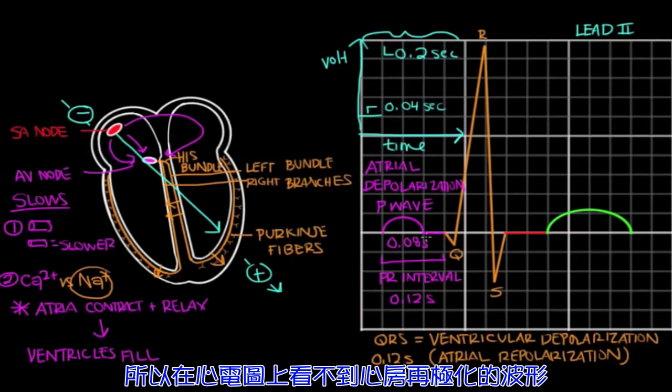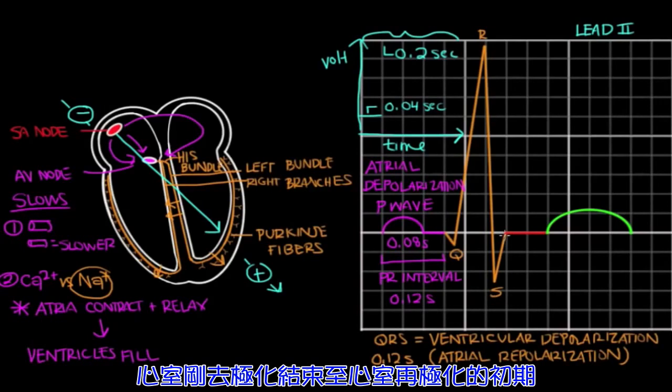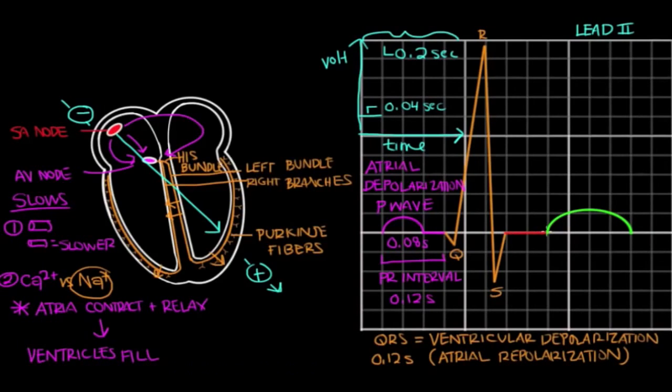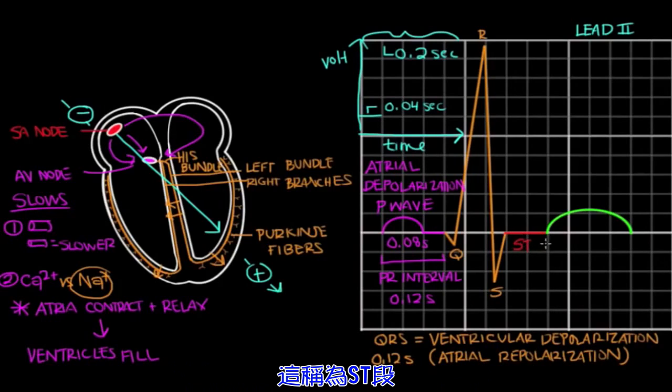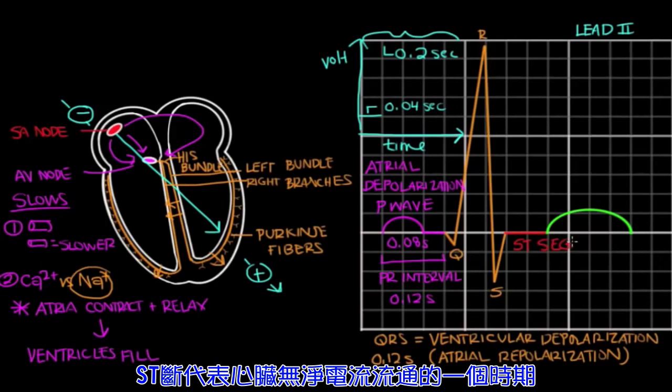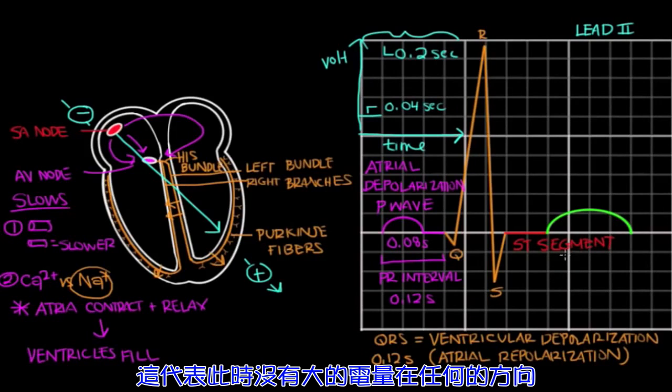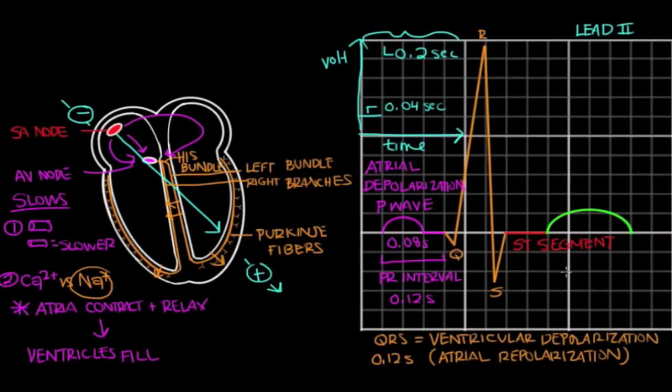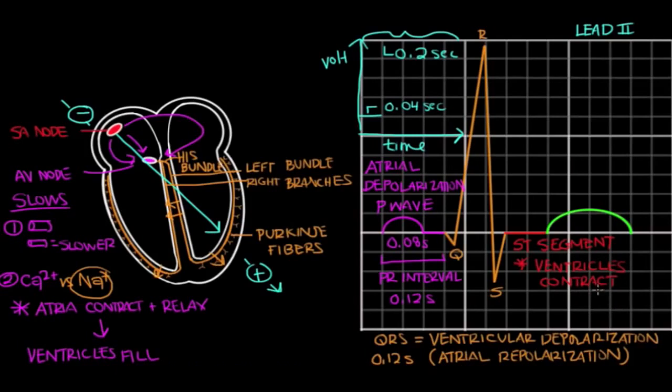So just after ventricular depolarization and in the initial phase of ventricular repolarization, there's a flat segment on the EKG known as the ST segment. And the ST segment represents a period where there's no net current. That's to say there's no large electrical vectors in any direction. However, this doesn't mean there's not a lot going on. During the ST segment is when the ventricles are contracting and are pumping blood to the aorta and to the pulmonary artery.